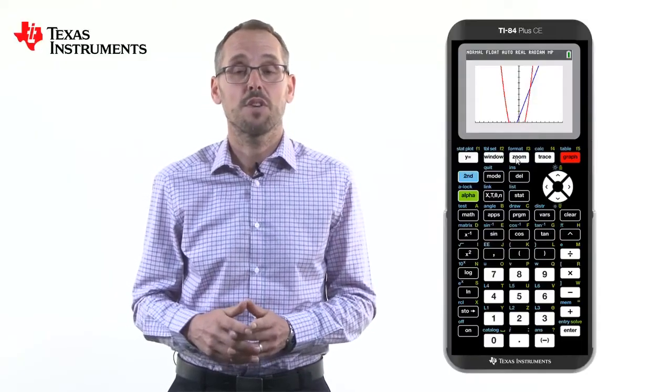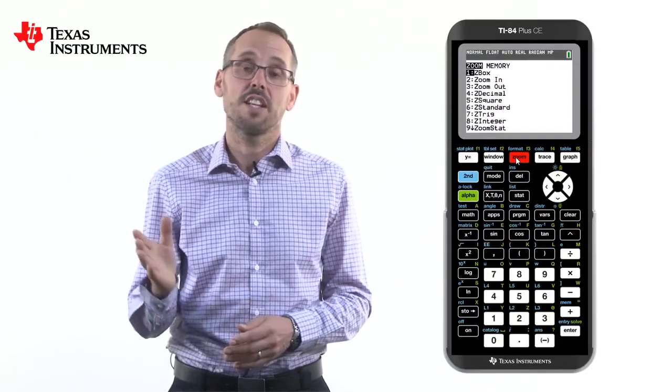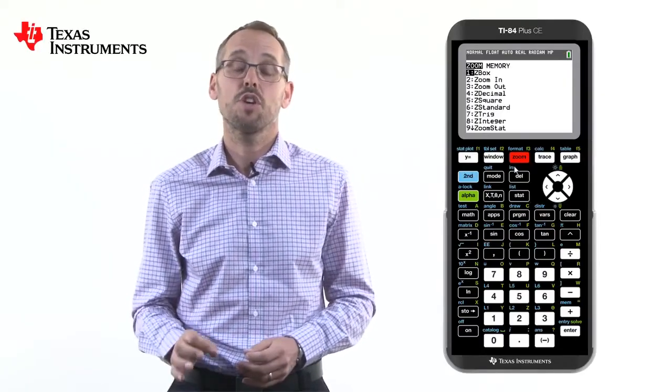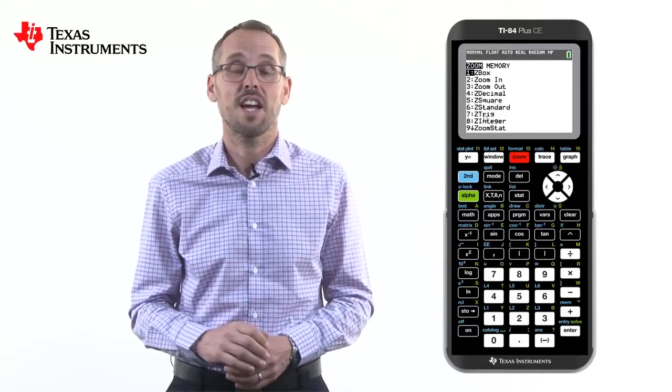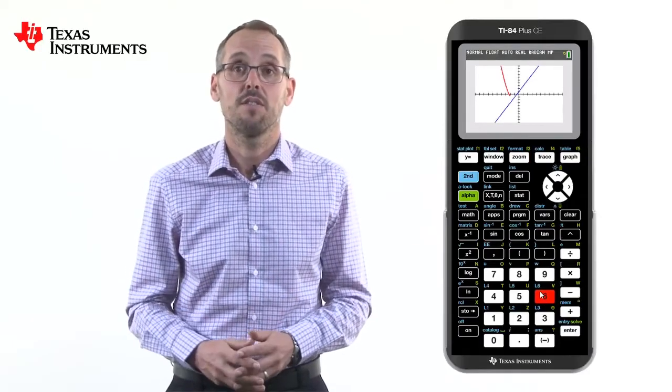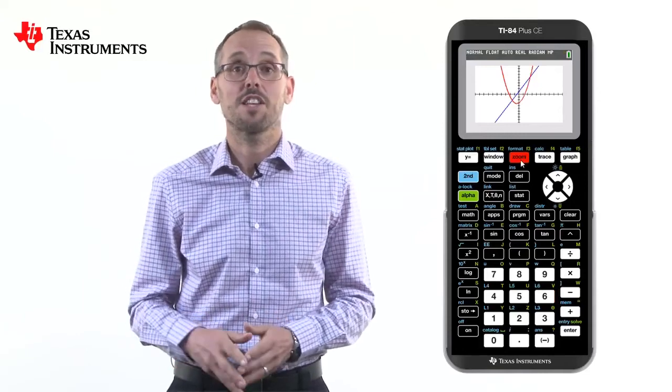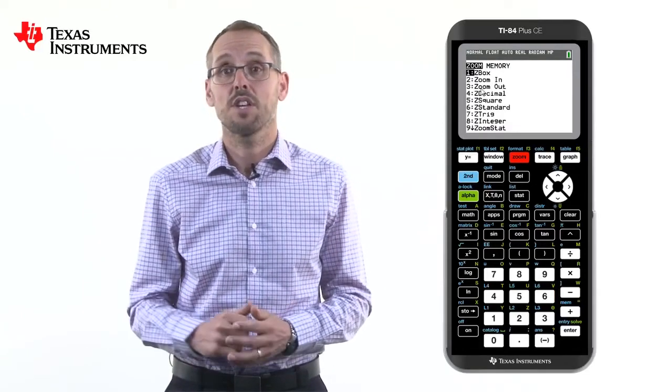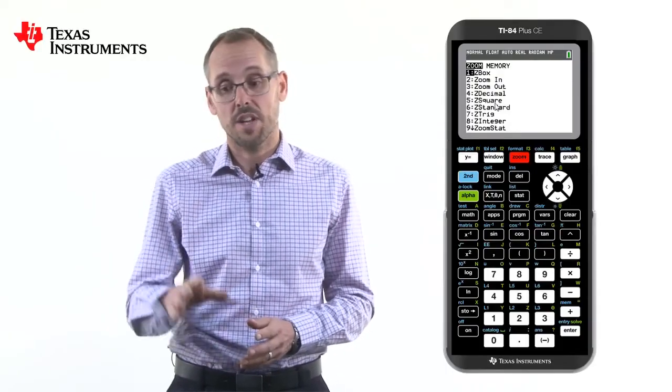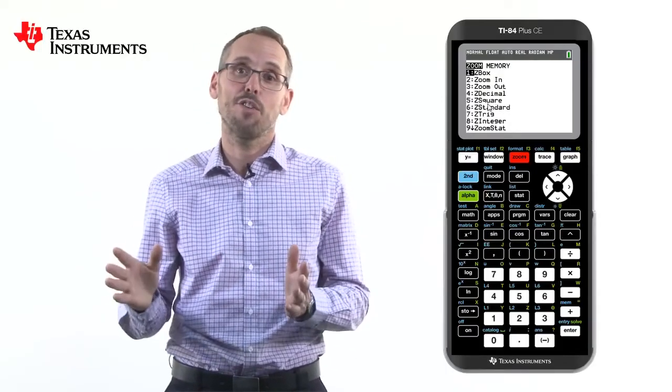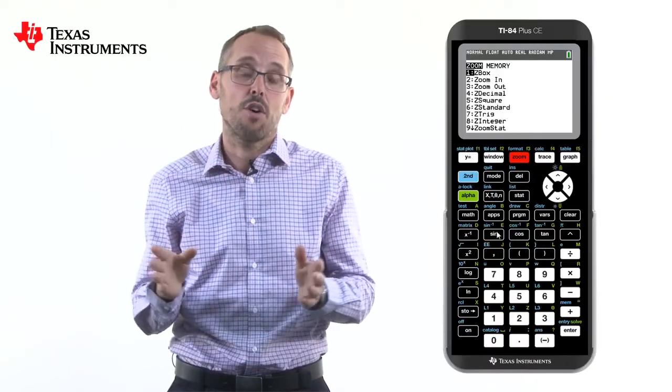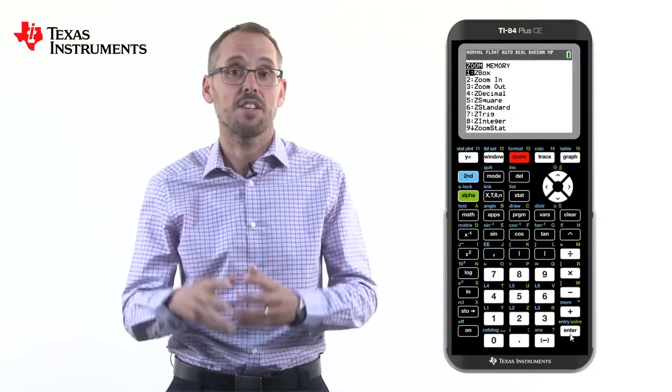The other option is to press the zoom key. This is also located along the top of the handheld. If we press zoom, you can notice that number six is zoom standard. That puts it back to the minus 10 to 10 axes that we had originally. We also have other options like zoom in, zoom out, and zoom square, which is very useful if we're wanting to draw a circle so it actually is to scale rather than looking like a footy ball, and zoom box, which we can actually draw around a section of the graph and zoom in on that particular section.